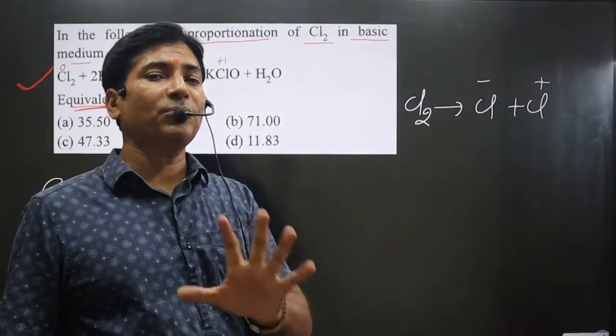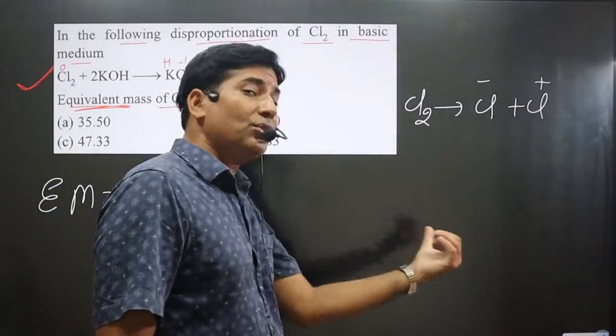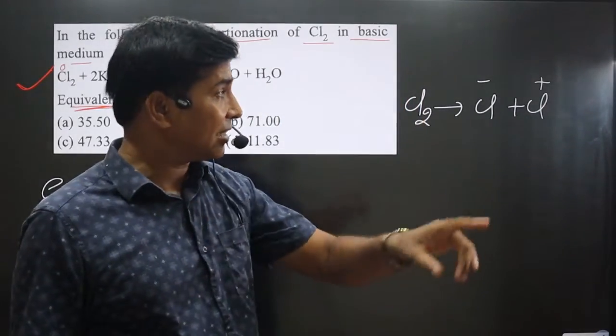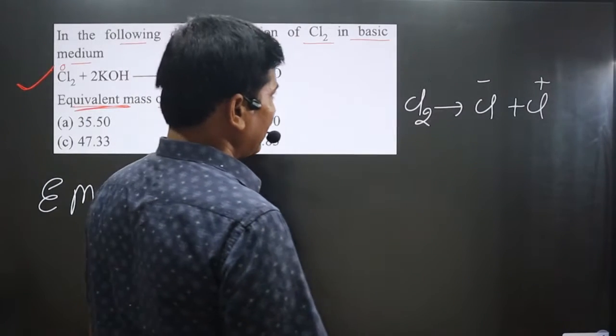This is where most of the students make a mistake because they assume right side 2 Cl, left side also 2 Cl, number of Cl are balanced. Keep in mind this is not a normal redox reaction. This is a disproportionation reaction. Pay attention carefully.